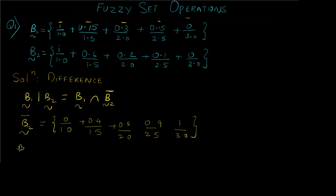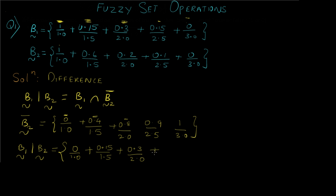The final answer is as follows. We compare the first terms and take the minimum, giving 0/1.0. Then we compare the next terms and take the minimum, giving 0.15/1.5. We continue comparing and taking the minimum for each remaining term. And there you go with the final answer — this is the formula for difference.